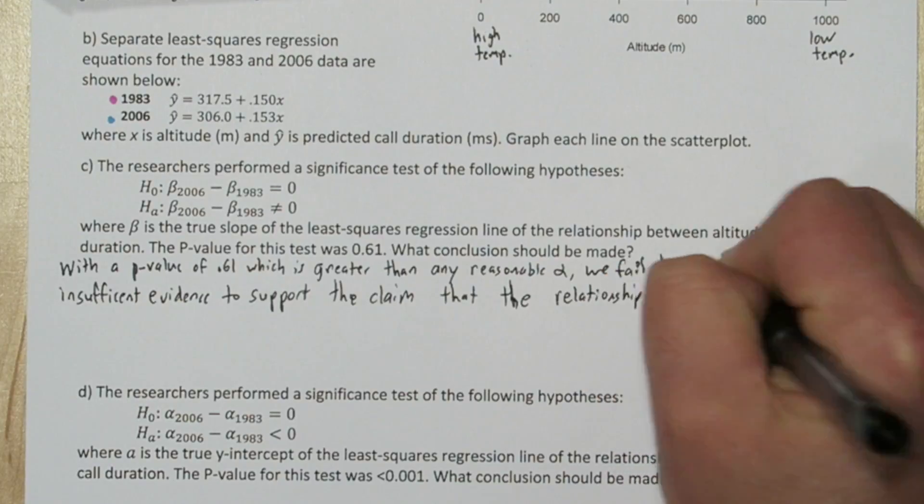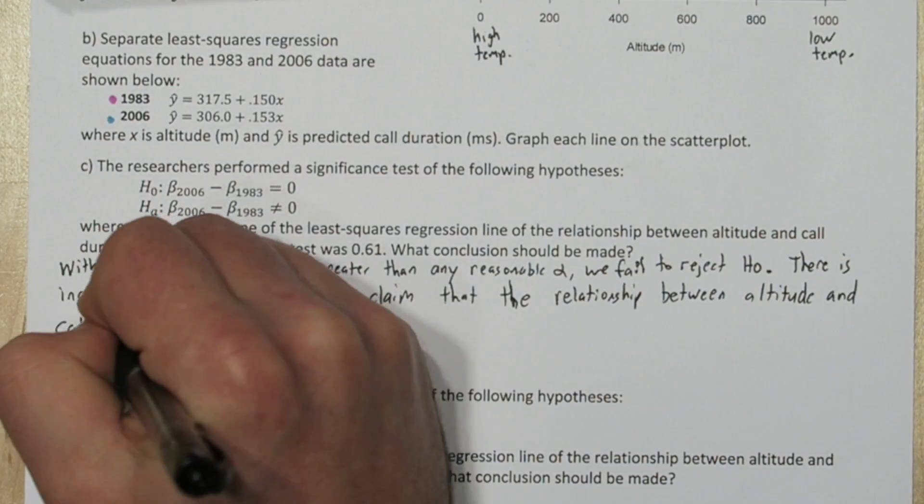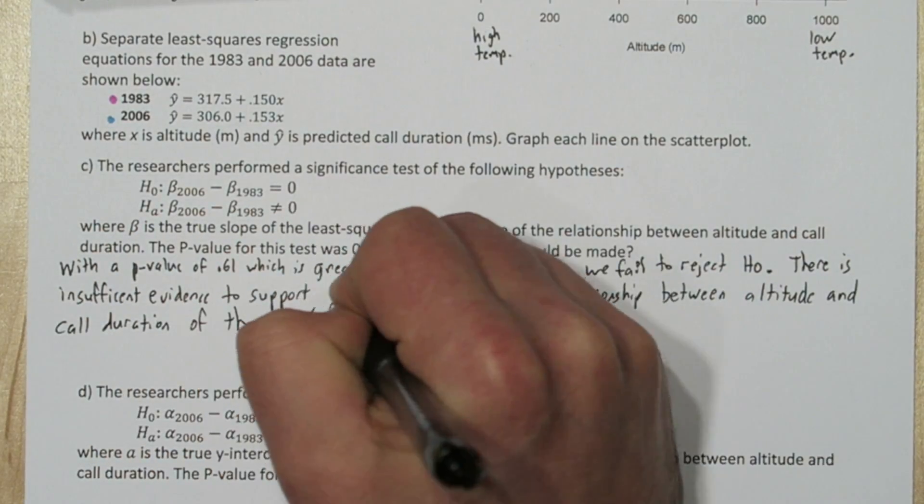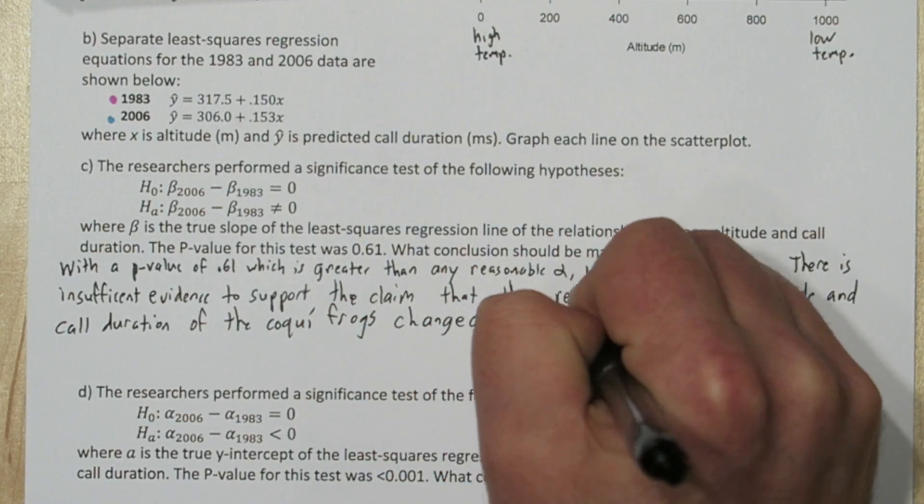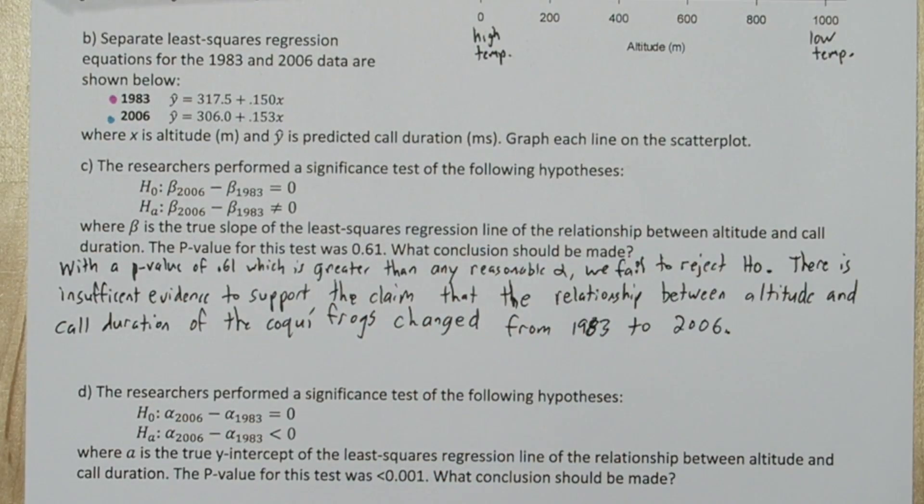There's insufficient evidence to support the claim that the relationship between altitude and call duration of the Cokie frogs changed from 1983 to 2006.